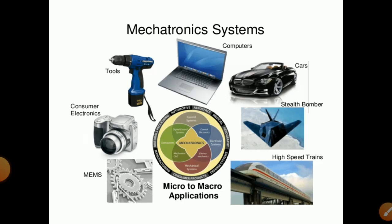Mechatronic systems have applications from micro to macro. For example, MEMS is one type of application of mechatronics. Other examples include consumer electronics, tools, computers, cars, stealth bombers, and high-speed trains. These are all advanced technologies that make use of mechatronic systems.